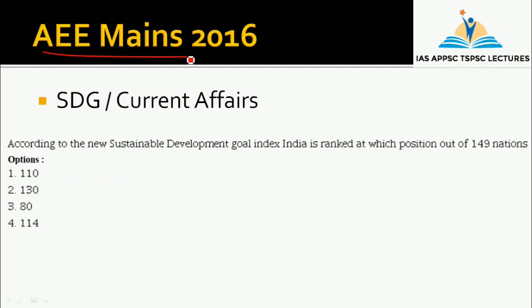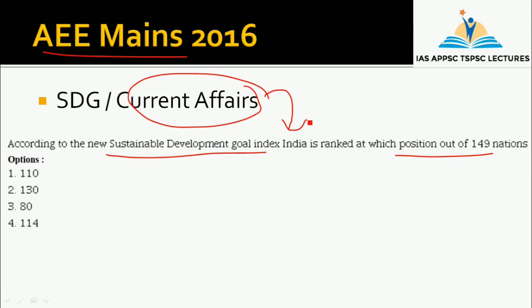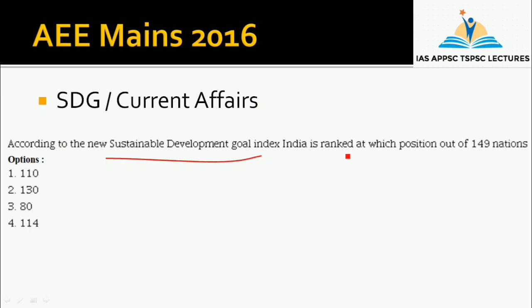First, choose a main 2016 question: According to the new Sustainable Development Goal Index, India is ranked at which position out of 149 nations? This is a current-affairs related question. You already know the reports and indices module, so let's talk about Sustainable Development Goals. This is from the Hindu newspaper — follow Sustainable Development Goals perfectly.